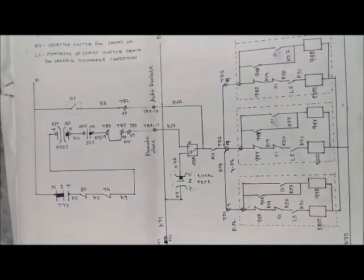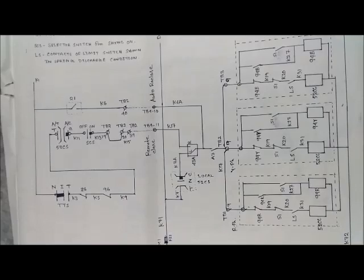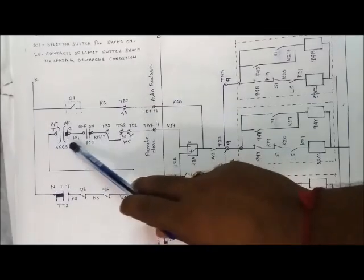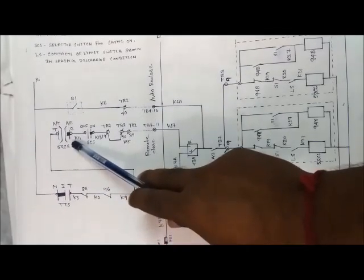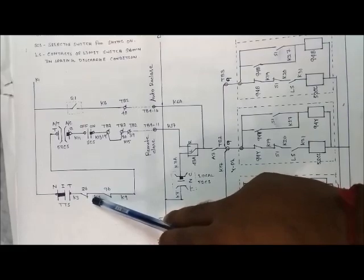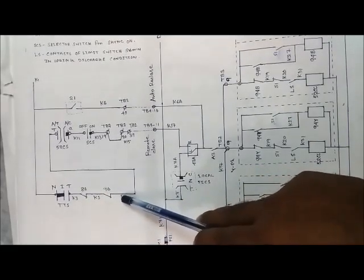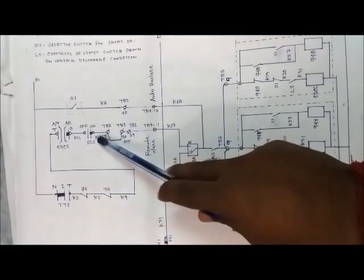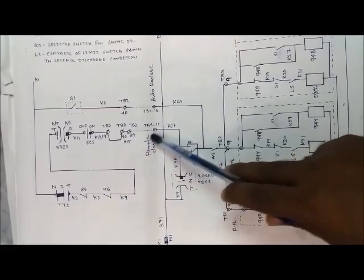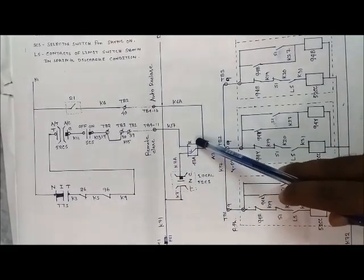For remote closing, the TTS switch position must be in either normal or inter position. Also ensure that the 86 and 96 relays are not in the operated condition. If we give the control pulse from the closing control switch, the positive DC comes through the TTS switch, through the NC contact of the 86 relay, through the NC contact of the 96 relay, through the SCS switch — which must be in the ON position.